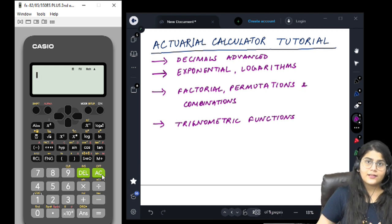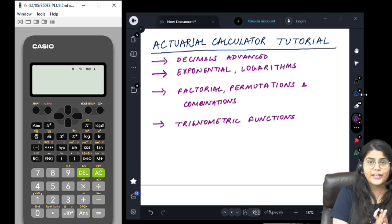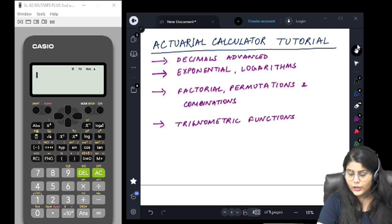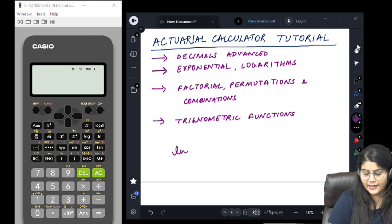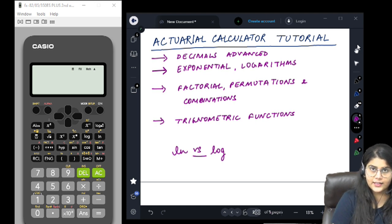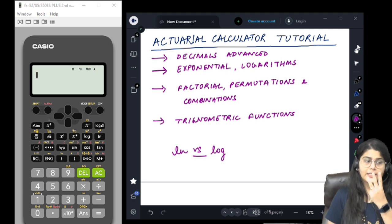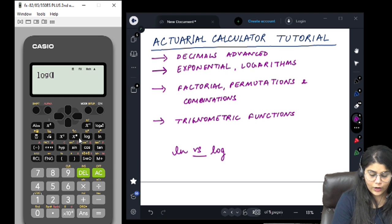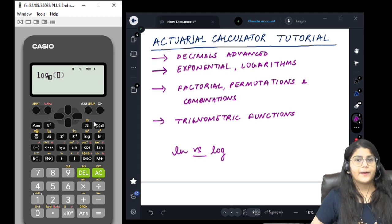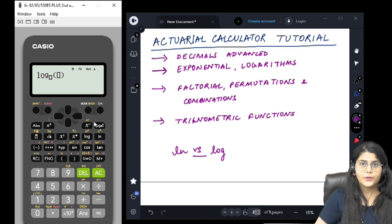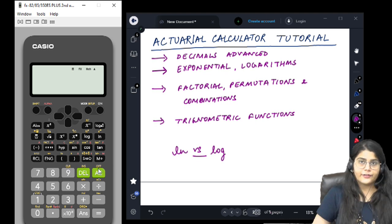Now, these two were very important things to understand for the decimal area. Coming next is exponentials and logarithms. Again, a very important concept in our actuarial science journey. So, first of all, I want you all to understand the difference between ln and log. You can see on your calculators as well, you have 3 buttons pertaining to logarithms. The first one is the log button, second is the ln button and then we have a log button with base empty as well as input empty. What is the difference between the three?